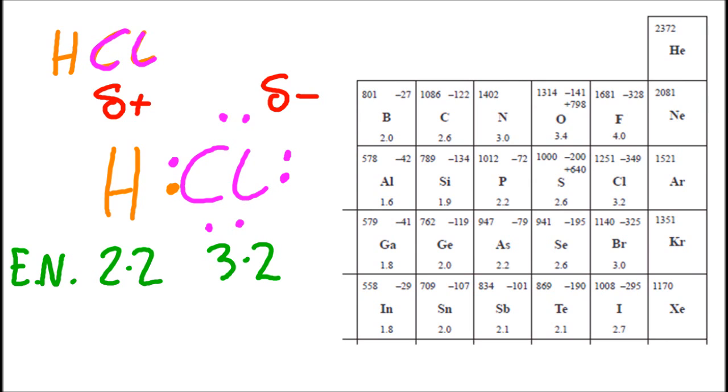So the electron pair that makes up the covalent bond is going to move towards the chlorine, making what's called a dipole. So one end of the molecule is going to be a little bit negative, the other is going to be a little bit positive. And so that's a polar bond between hydrogen and chlorine.